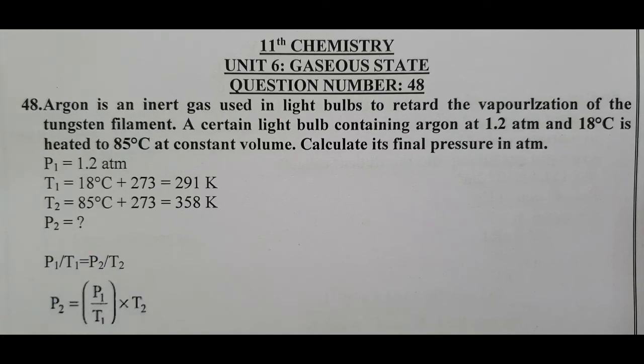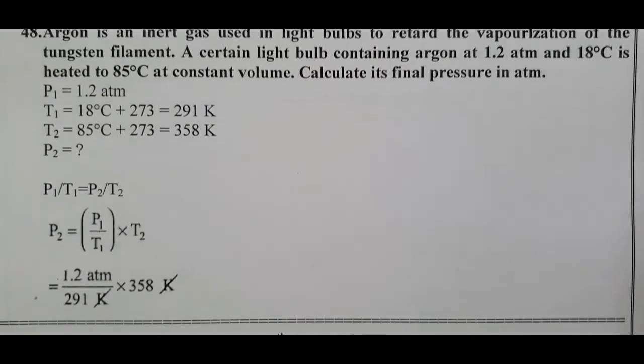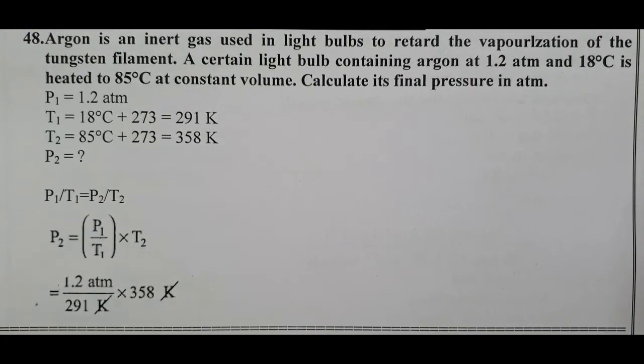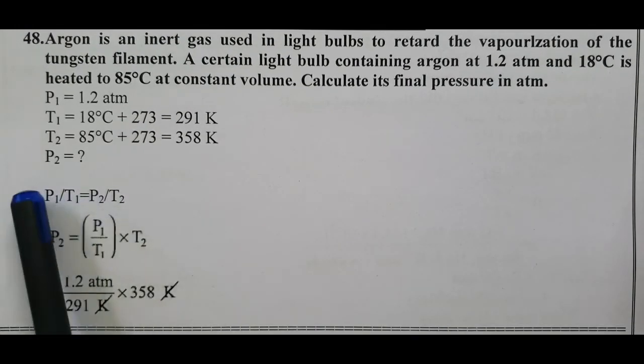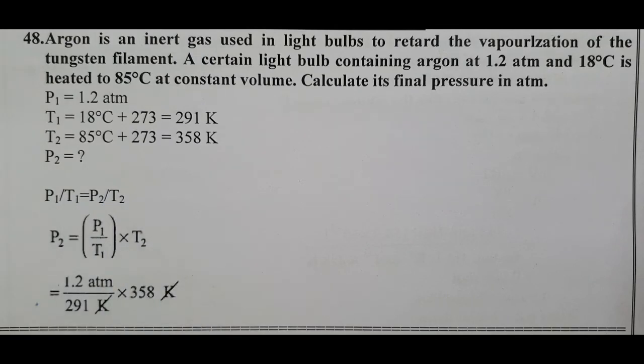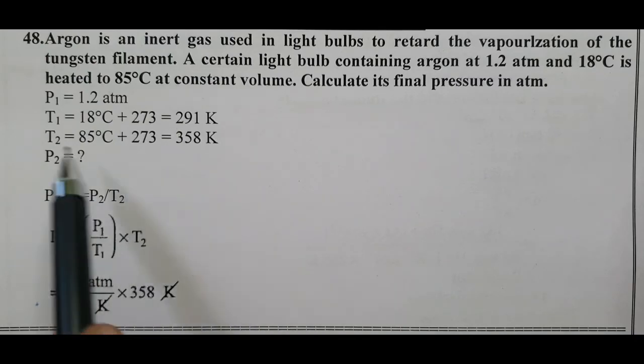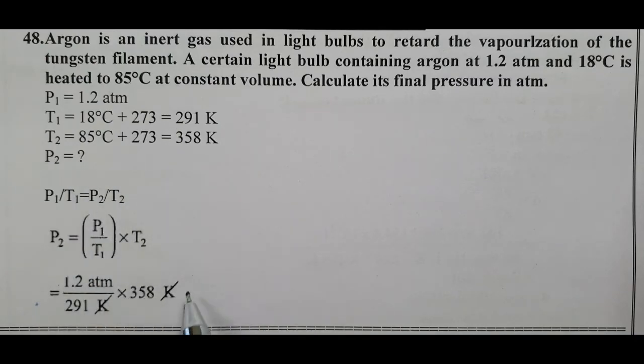So P1 by T1 equals P2 by T2. Now we have to calculate P2, so P2 equals P1 by T1 times T2. P1 value is 1.2 divided by T1 equals 291, times T2 value 358 Kelvin. Kelvin cancels.